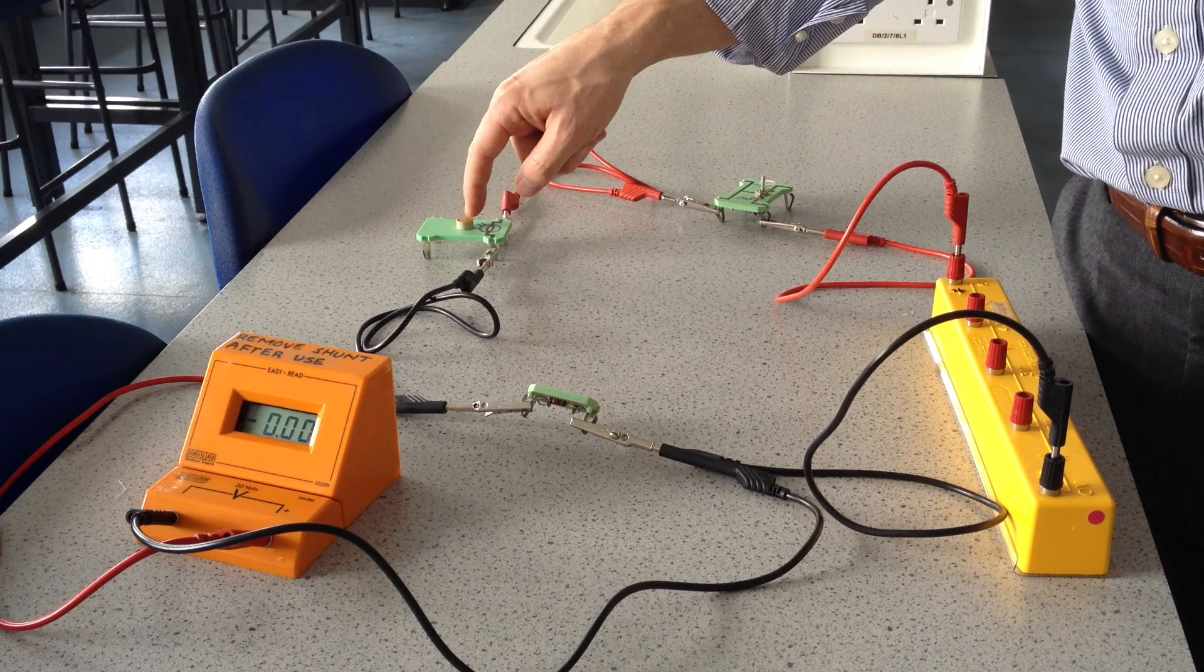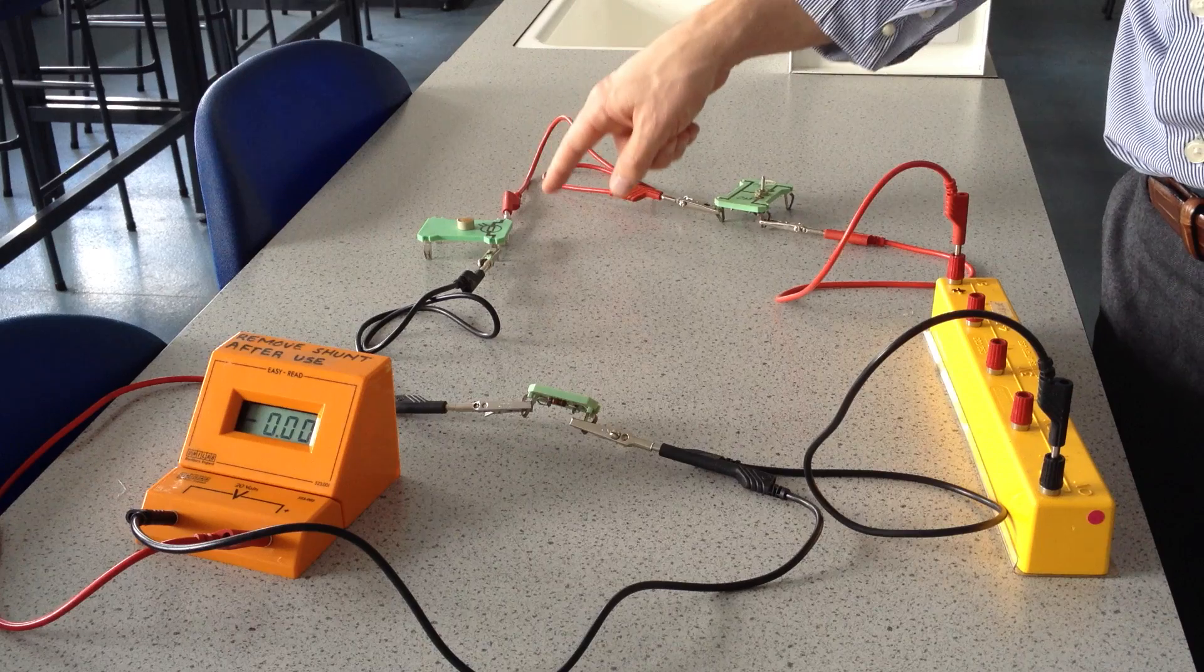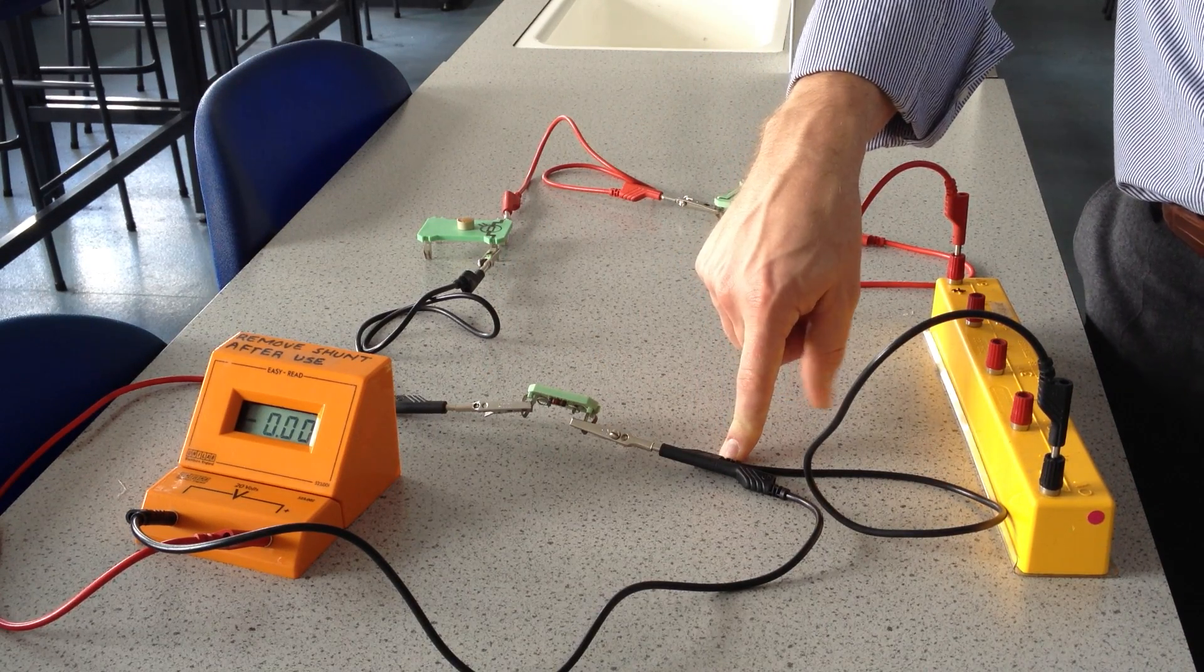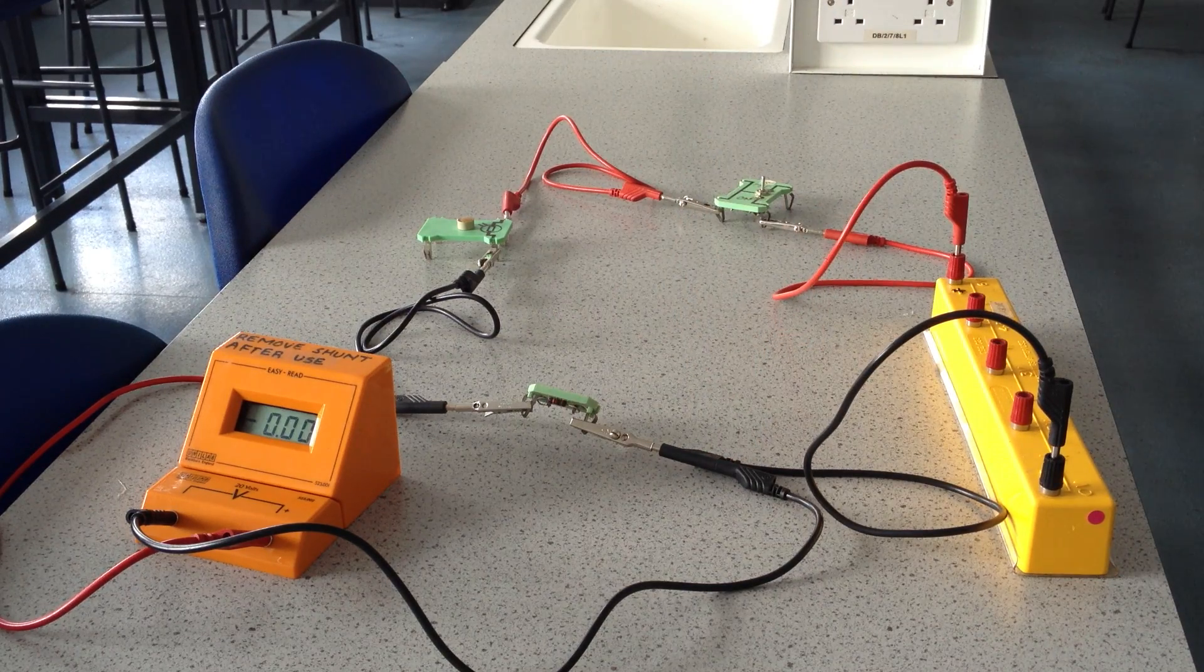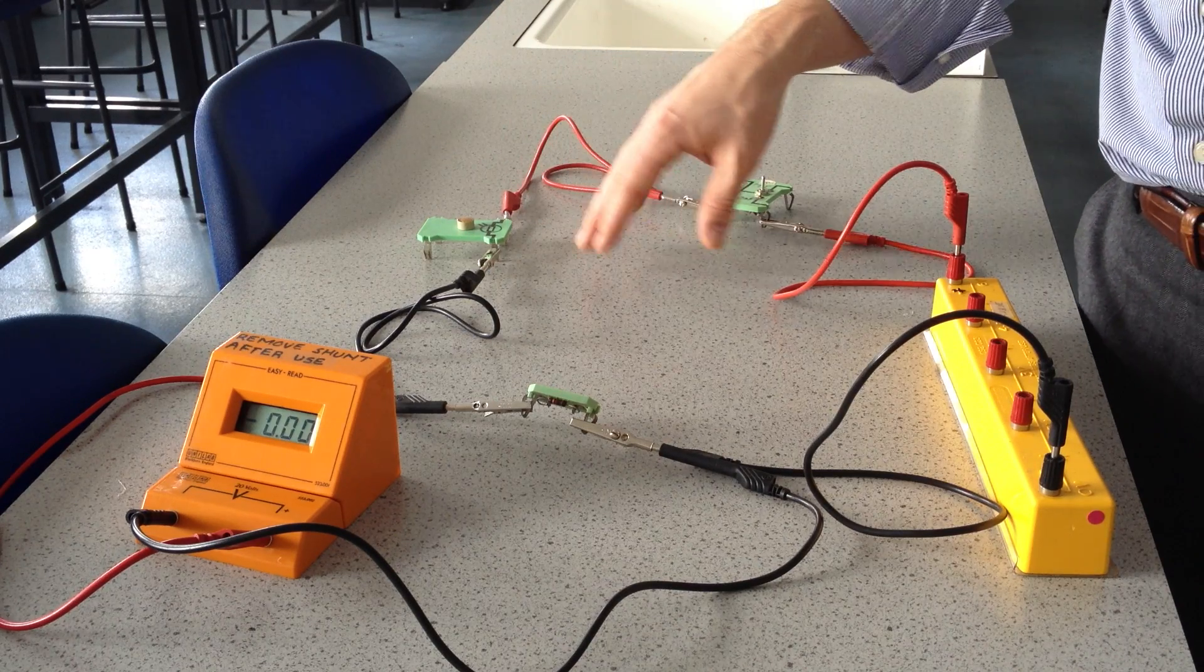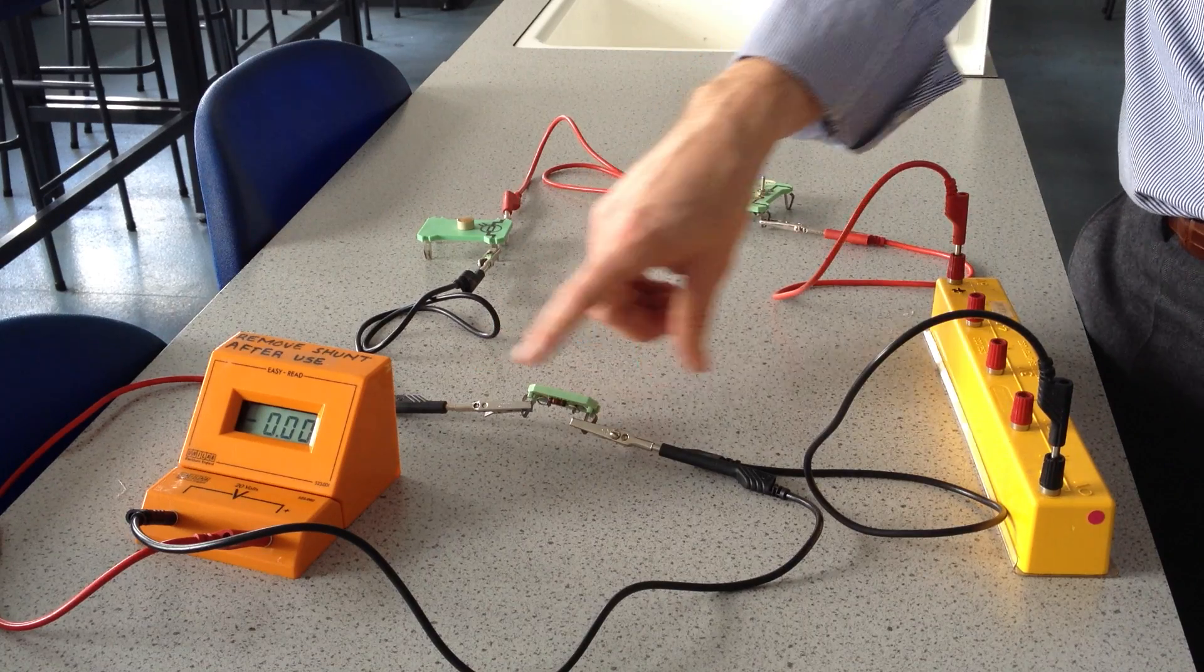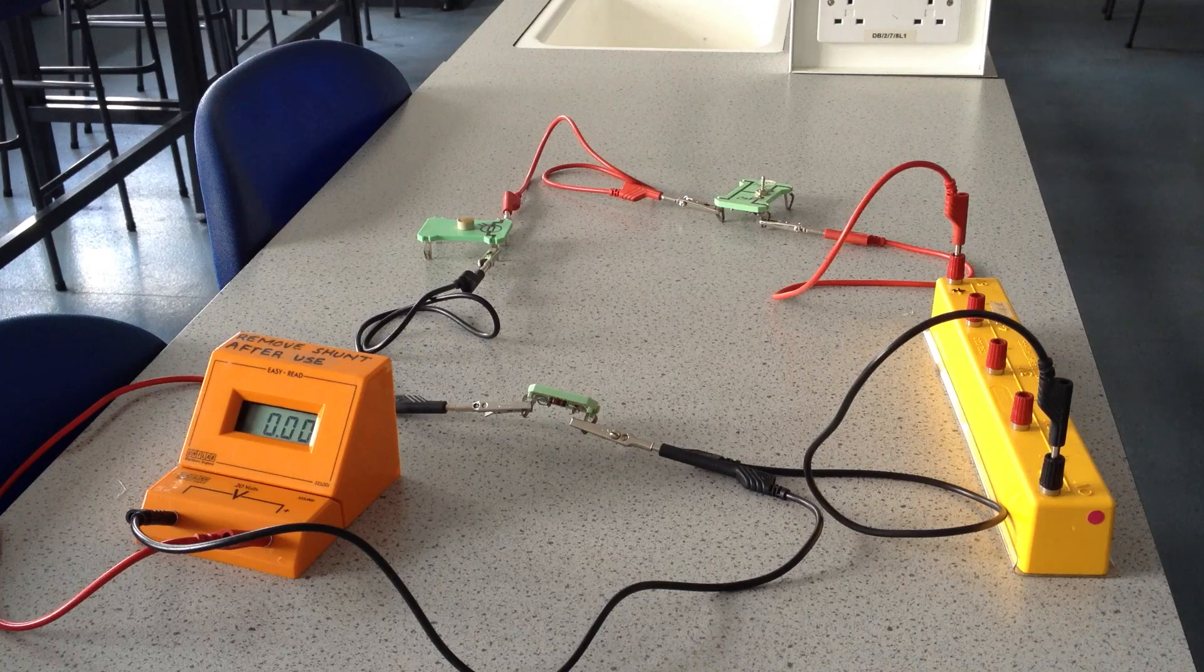So, decrease light intensity, increase the resistance, increase the voltage share across the LDR, decrease the voltage share across the fixed resistor, which is our voltage output. Increase the light intensity, decrease the resistance, decrease the voltage share across the LDR, and increase the voltage share across the fixed resistor, which is our voltage output.